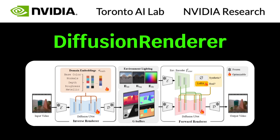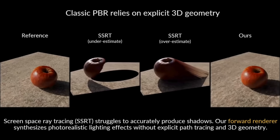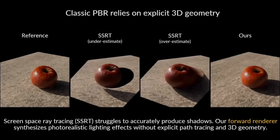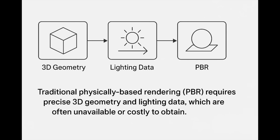NVIDIA AI releases Diffusion Renderer, a unified neural framework for both inverse and forward rendering, enabling photorealistic scene editing from a single video input. Traditional physically based rendering (PBR) requires precise 3D geometry and lighting data, which are often unavailable or costly to obtain.